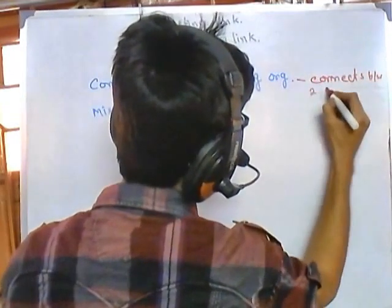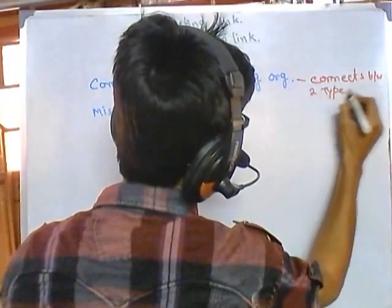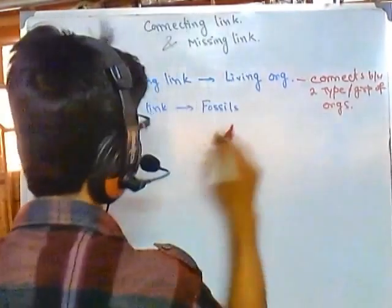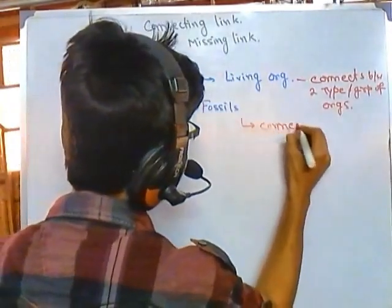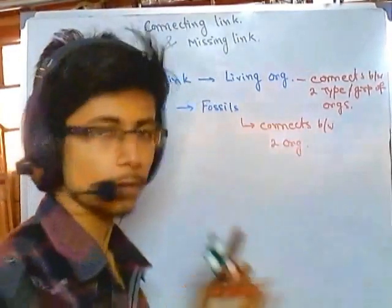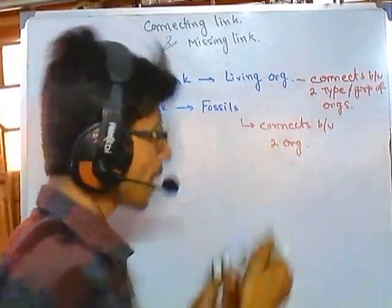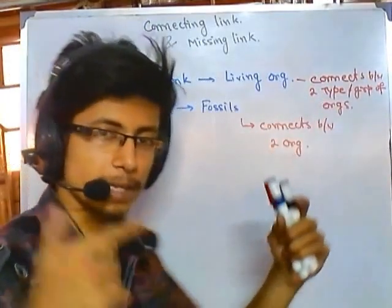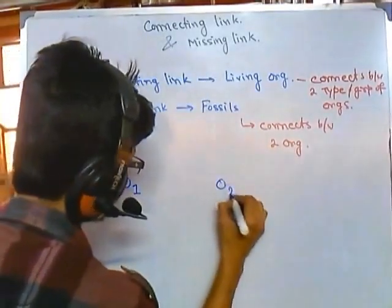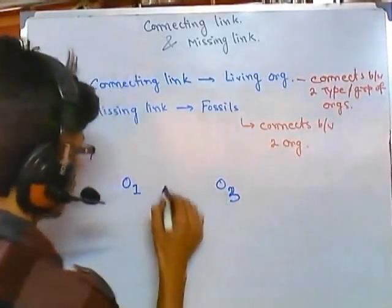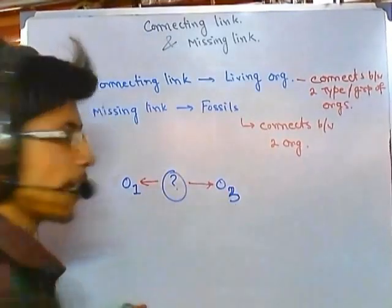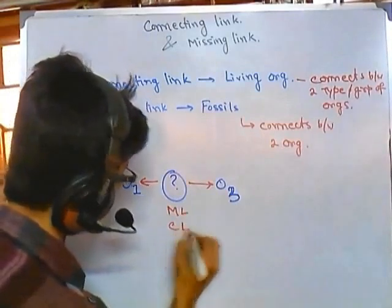Connecting link connects between two types or groups of organisms, and missing link also connects between two organisms. The actual goal for both connecting link and missing link is the same — both compare, connect, and make a bridge between organisms. Say organism 1, organism 2, and organism 3 — something in the middle connects organism 1 with organism 3, and that work is done by a missing link or connecting link.